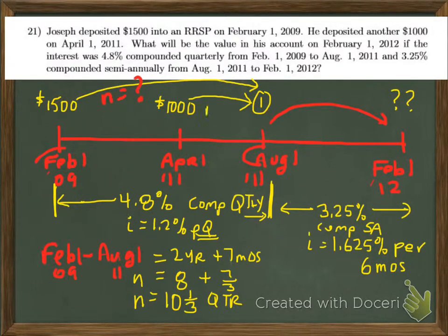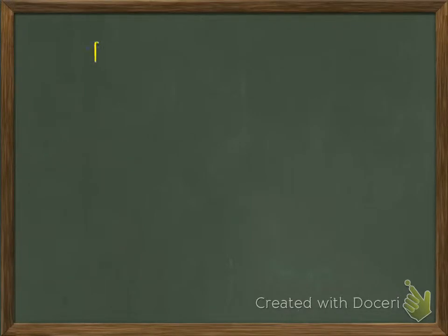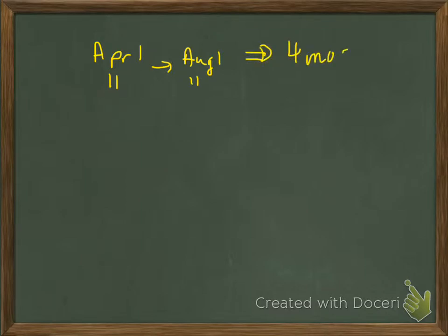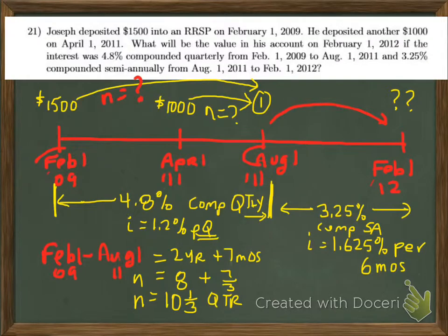For the $1,000 deposit, we count from April 1, 2011 to August 1, 2011 — that's 4 months. With quarterly compounding, 4 months equals 4/3 quarterly periods, or one and one-third quarterly periods.